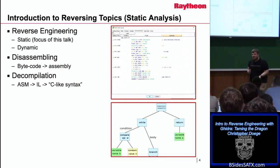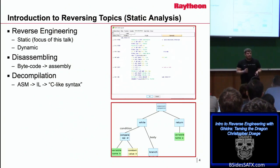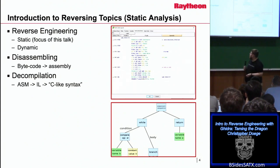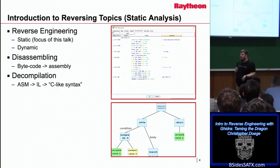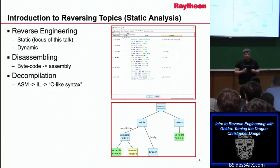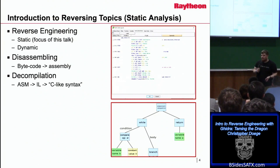Now we're going to talk about static analysis. Ghidra is not a dynamic tool at its current release — it doesn't have a debugger attached, though I've heard they are planning to release one based on Twitter. Reverse engineering can be broken down to static and dynamic analysis. Dynamic means you're actually executing or emulating the binary and can see results from various instructions. Static means just looking at the assembly or a decompiled C-like syntax.